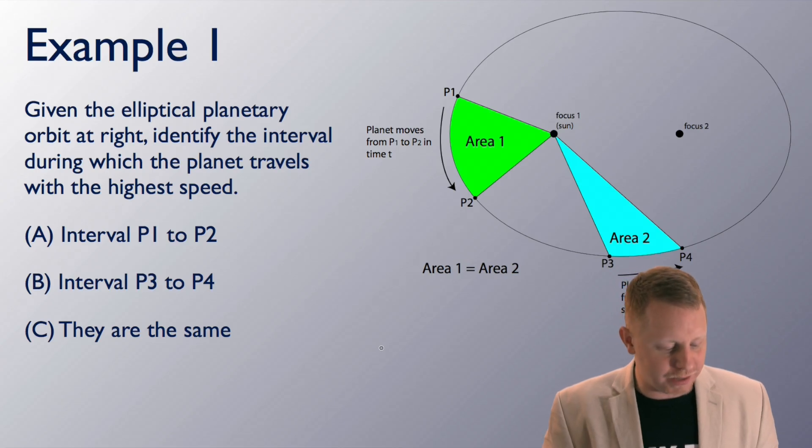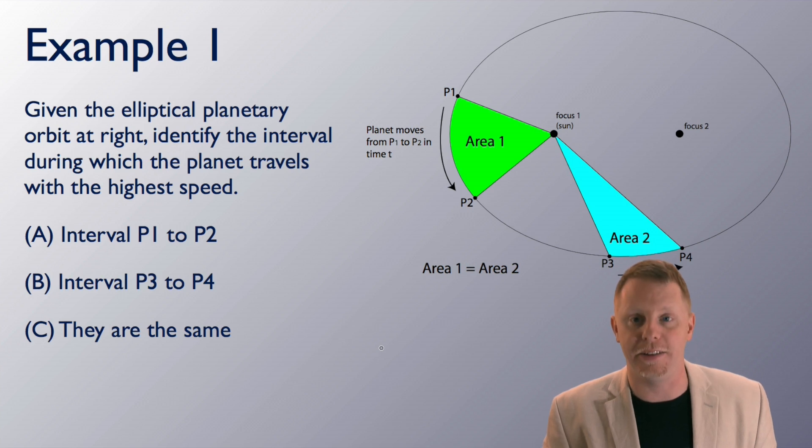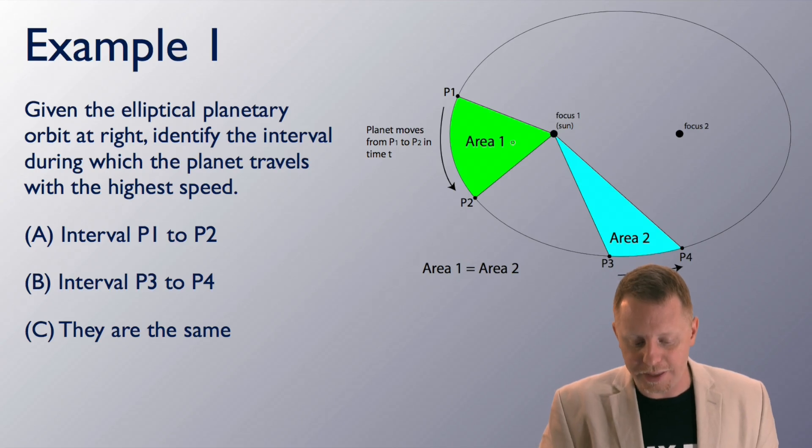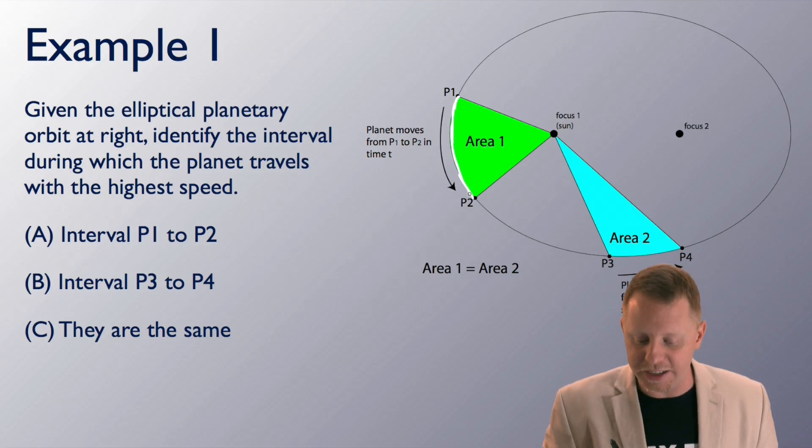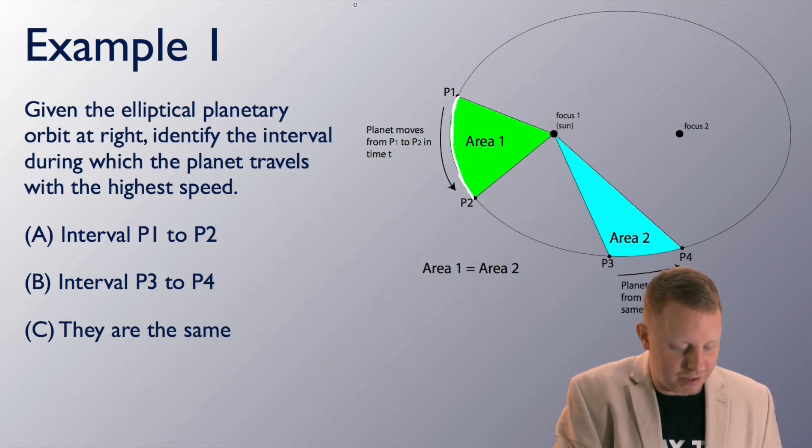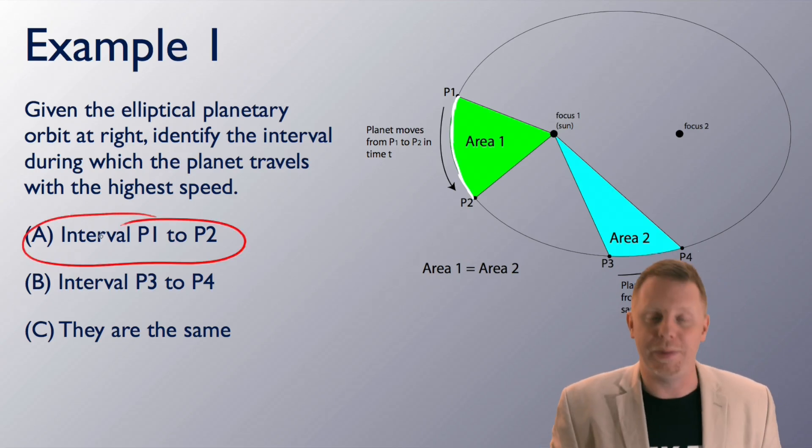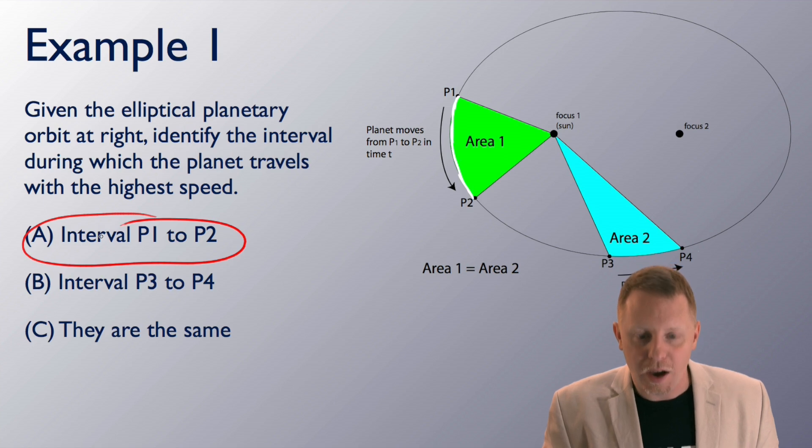Example 1. Given the elliptical planetary orbit over here at the right, identify the interval during which the planet travels with the highest speed. Using Kepler's first law of planetary motion, we know that they're going to sweep out equal areas in equal times, and it tells us these areas are equal. If that's the case, going from 1 to 2 takes the same amount of time as 3 to 4. But, as you go from 1 to 2 here, you're traveling a greater distance than you are from 3 to 4. Therefore, you must have a higher speed in the interval from p1 to p2.